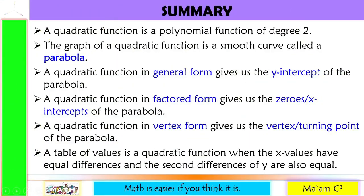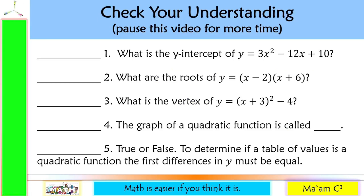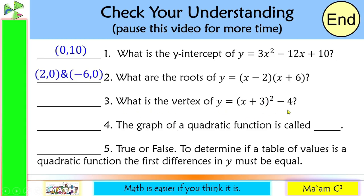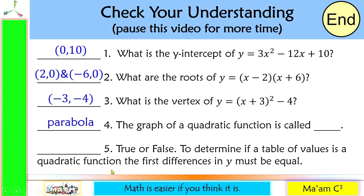For the summary, here are the things we discussed in this lesson — take time to understand this. Now let us check your understanding. The y-intercept of the equation is at (0, 10), taken from the constant. The roots are (2, 0) and (negative 6, 0). The vertex is at (negative 3, negative 4). The graph of a quadratic function is called a parabola. Finally, it is false that the first differences in y must be equal — it must be the second differences in y that are equal.